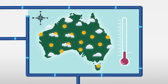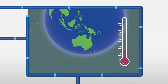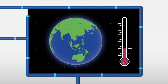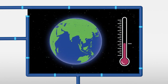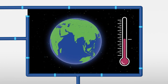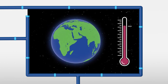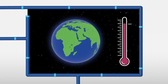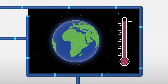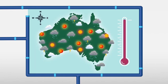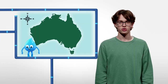The climate in Australia is changing as temperatures have gotten hotter across the globe. Temperatures have warmed, and although the Earth's climate has always changed, this time the warming is happening a lot faster than ever before. This is referred to as global warming, and it is causing more extreme weather events like floods and droughts.